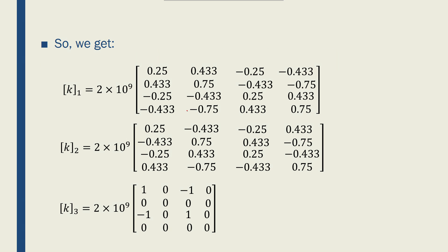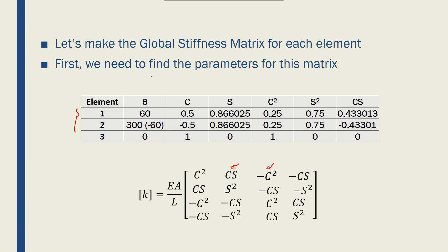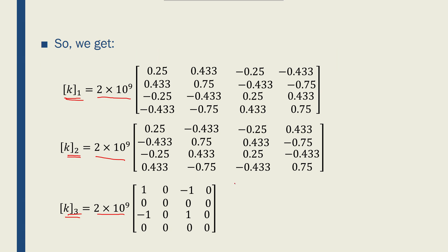After computing that table, we're ready to make the global stiffness matrix for each individual element. I've done that here: this is for the first element, this one is the second element, and this is the global stiffness matrix for the third element. I have factored out 2×10⁹ from all the matrices. The entries are built from cos², sin², and cosine×sine terms per element — cos squared, minus cos squared, cosine times sine, and so on — giving us three global stiffness matrices for our three elements.